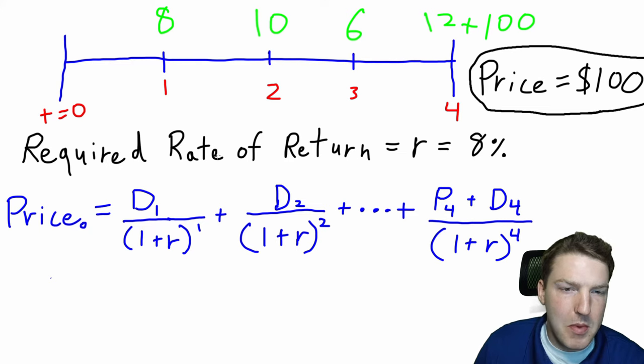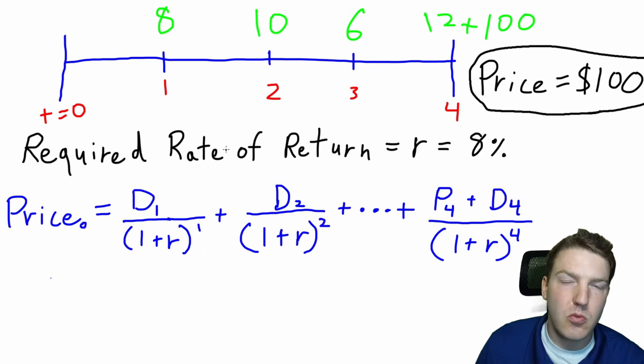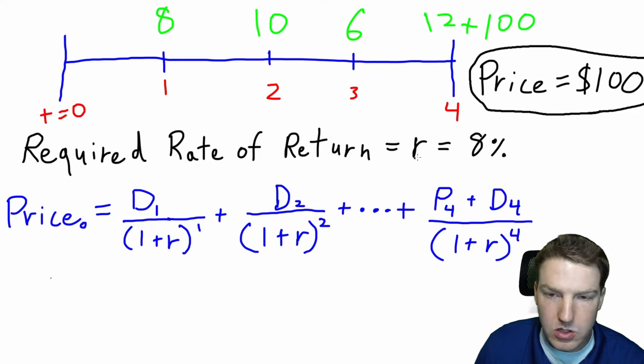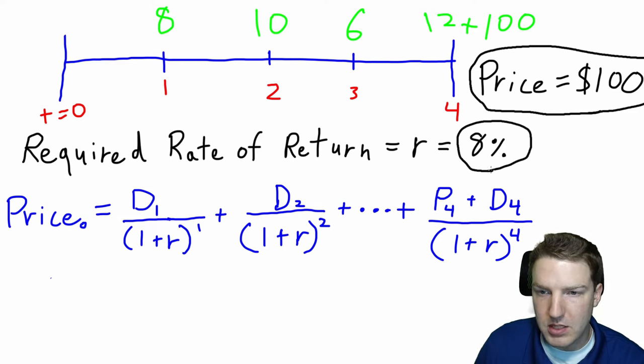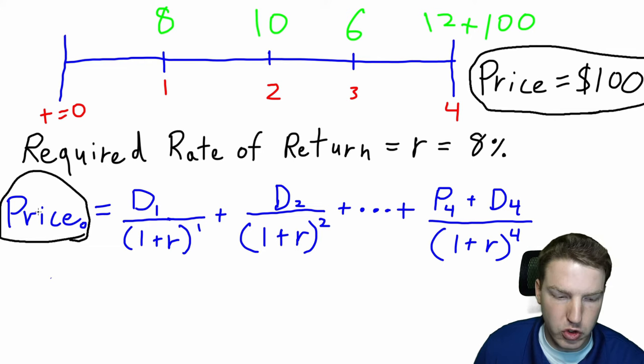We're going to have to make an assumption about the required rate of return of this stock. And so this will be based on the risk of the stock. Most dividend discount model problems give you this value. So we're going to assume that based on the risk of the stock, we need a return of at least 8%. We'll use this formula, the dividend discount model formula, to find the price or the intrinsic value that we believe the stock should be priced at.